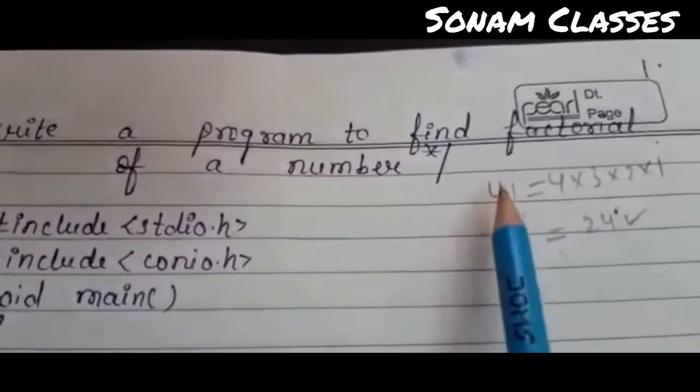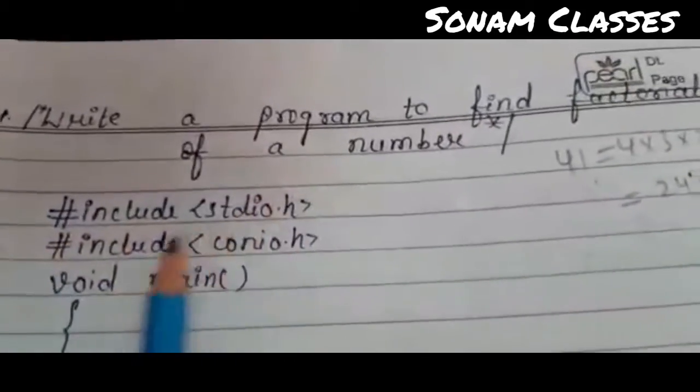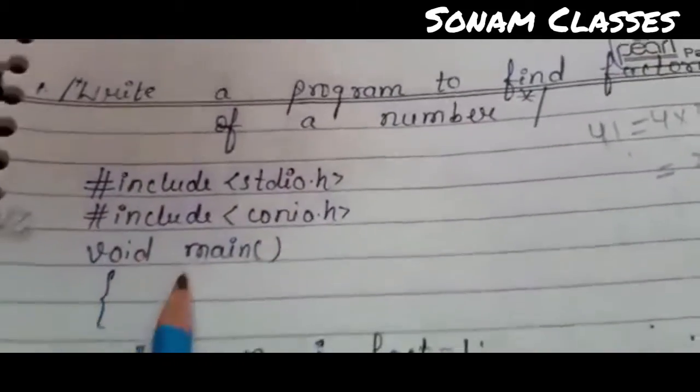So you have to enter 4 numbers. This variable will go to any one, it will be stored. Has included stdio.h, has included conio.h, void main.